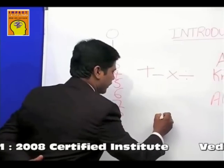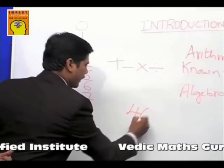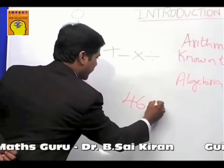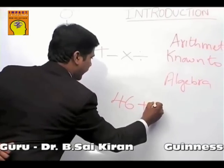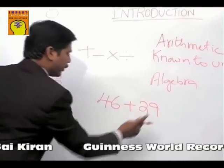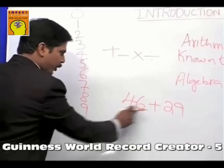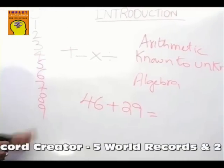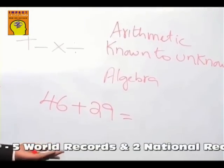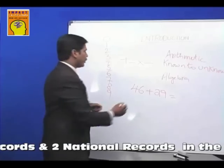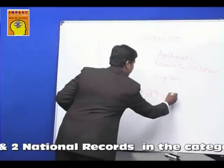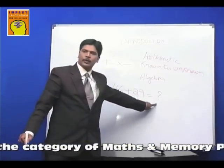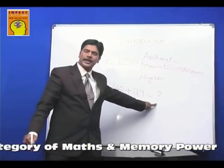For example, how much is 46 plus 29? You know what 46 is — it is a known value. You know what 29 is — we know this value. But the result when you calculate these numbers, that we do not know — that you have to calculate. So this becomes a question mark. This is called known to unknown. That is arithmetic.